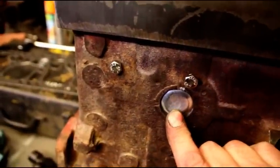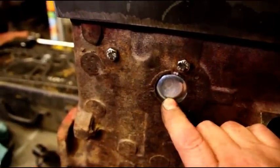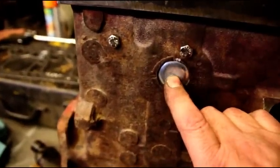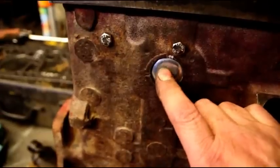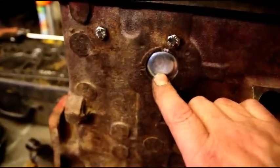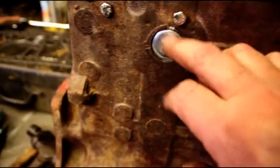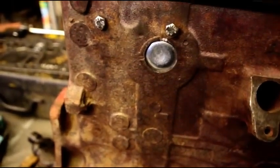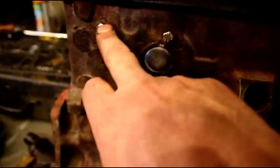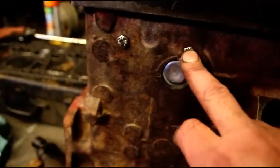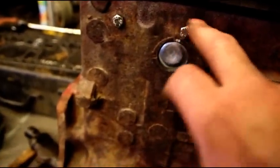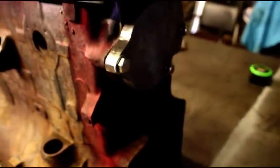And I'm starting to put these core plugs in. Some guys call them freeze plugs. They don't actually crack or pop out when the block freezes, the block will crack. These are originally to get the sand out of the block when they cast it. The coil bracket mounts here and those go directly into the water jacket, so I've got a little bit of sealer on those bolts. I've got a block off plate on the water pump.